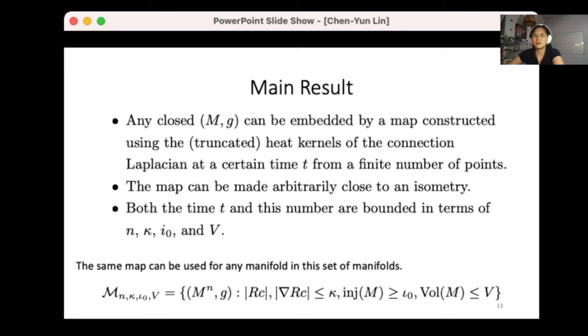Before I state the theorem, just a rough idea. The theorem is saying any closed manifold can be embedded by a map constructed using the heat kernels, or you can use truncated heat kernels, of the connection Laplacian. This map is constructed by the heat kernels at a certain time t using a finite number of points on the manifold. More to that, this map can be made arbitrarily close to an isometry, and both the diffusion time t and the number of points are being controlled by the geometric properties.